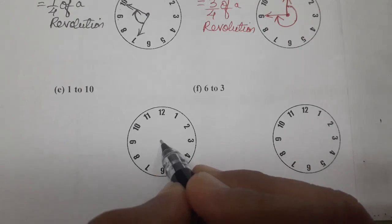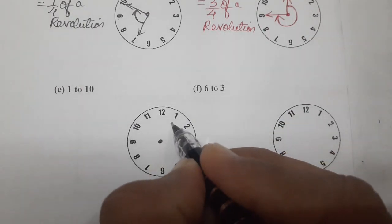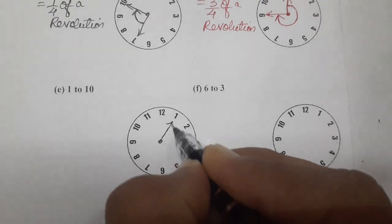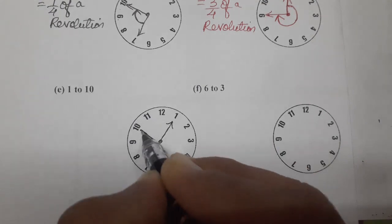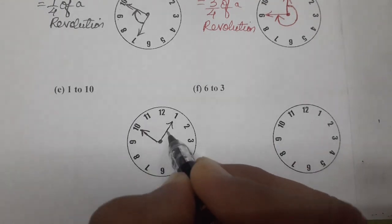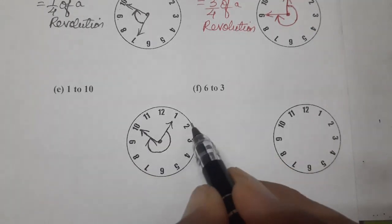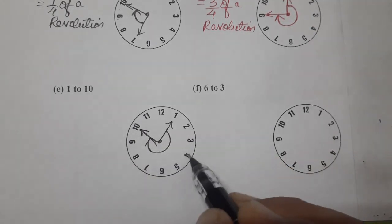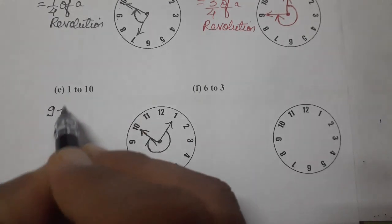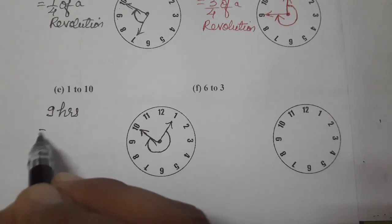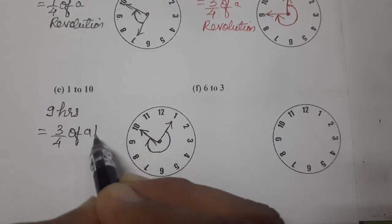So, see 1. Where is 1? First of all, mark center. You have to draw a clock every time. 1 to 10. Where is 10? 10 is here. And we have to move clockwise. So, in this way, we have to move 1 to 10. So, just count number hours. 1, 2, 3, 4, 5, 6, 7, 8, 9. So, 9 hours. So, 9 hours means 3 fourth of a revolution. Or 3 right angles.